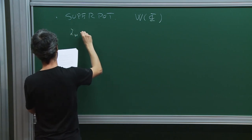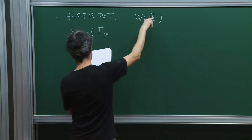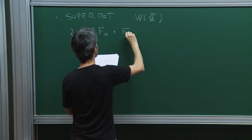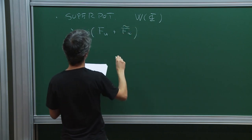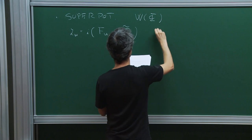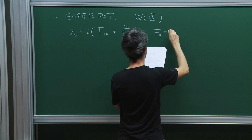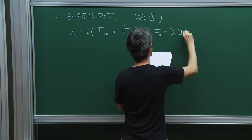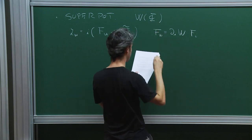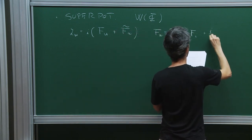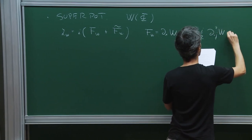In general, the Lagrangian is just the f-term of this particular chiral multiplet. If you work out what this top component of this chiral multiplet is, it's the same expression as on flat space: the derivative of the superpotential with respect to the various chiral fields, plus some Yukawa-like interactions.